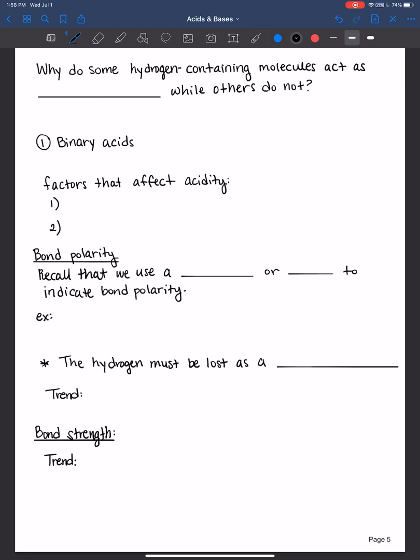So you may be wondering why do some hydrogen containing molecules act as acids, also known as proton donors, if we're thinking about the Bronsted acid definition that we learned in the previous video. Well it all comes down to understanding their structure property relationships.